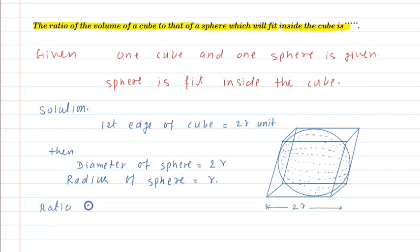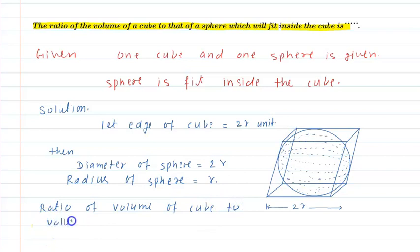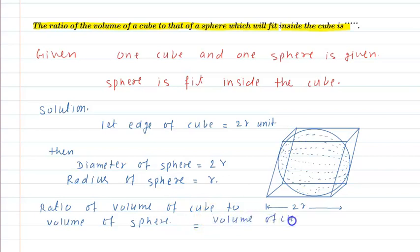The required ratio is: ratio of volume of cube to volume of sphere. So we write volume of cube divided by volume of sphere.